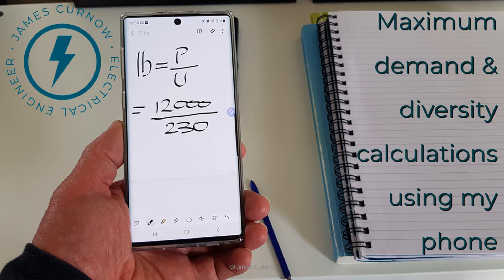I've talked about maximum demand and diversity in previous videos, however in this video I want to do something a bit different. A lot of the time we need to do diversity calculations when we're on site and might not have a calculator at hand. So I'm going to share a tip on calculating diversity for a cooker circuit which can be done in one step and is even possible to do on a smartphone.